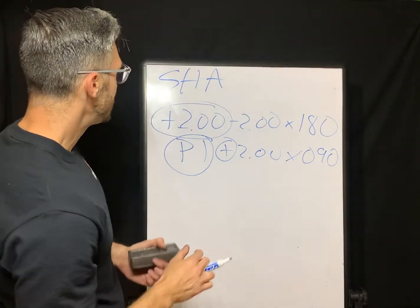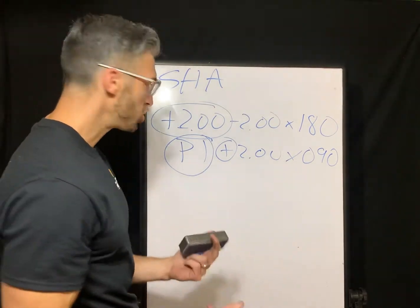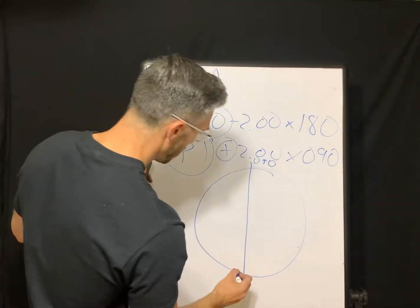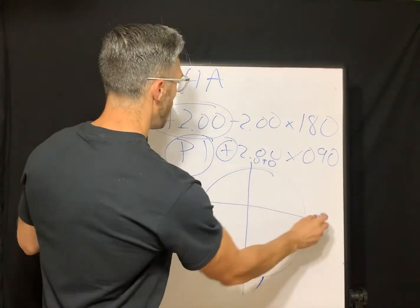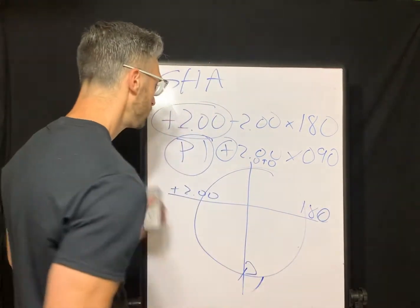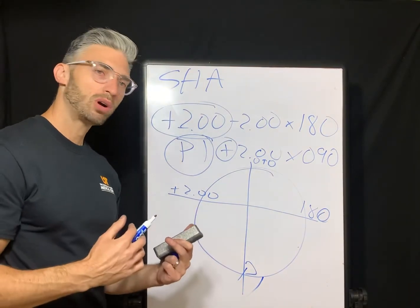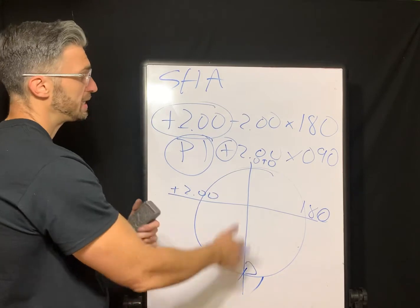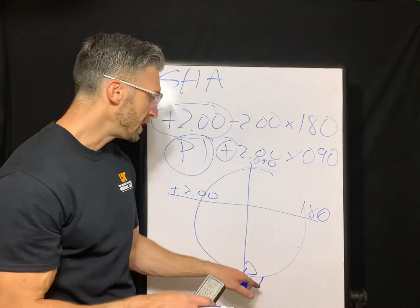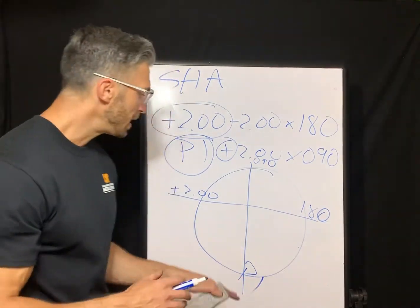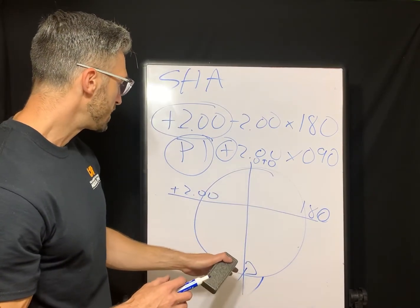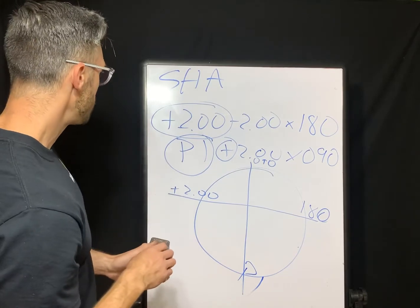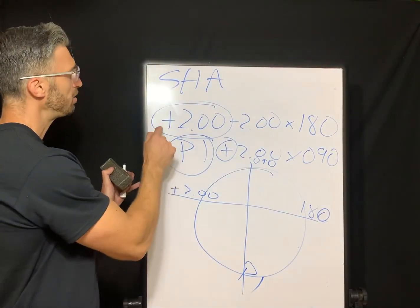Our cornea is steeper in the 90-degree meridian. We need plano power to correct in the 90 and plus two along the 180. A plus two means the cornea is flatter in the horizontal meridian, so we need less power there. Because the cornea is steeper along the 90, this is with-the-rule astigmatism. It's simple hyperopia because you have plano in one meridian and plus two in the other.